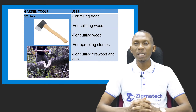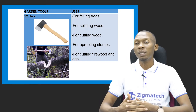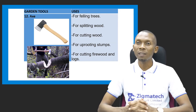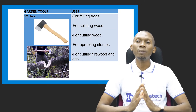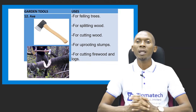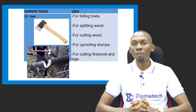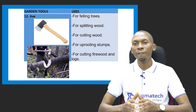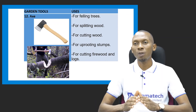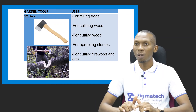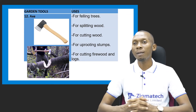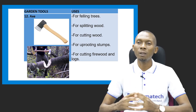We have the axe as another garden tool, which is used for felling trees — technically you fell trees. It is also used for splitting woods and cutting woods. It can also be used for pruning stumps, which are the leftover parts after a tree has been cut, and for cutting firewood and logs.